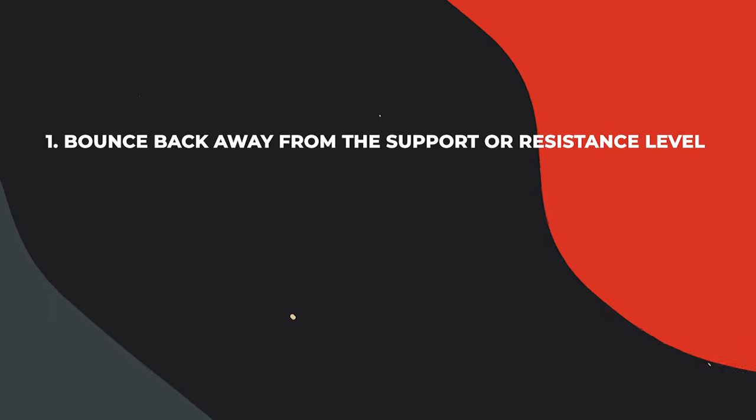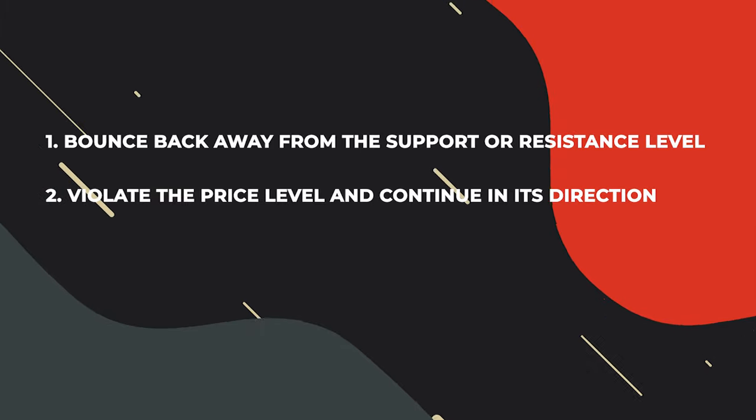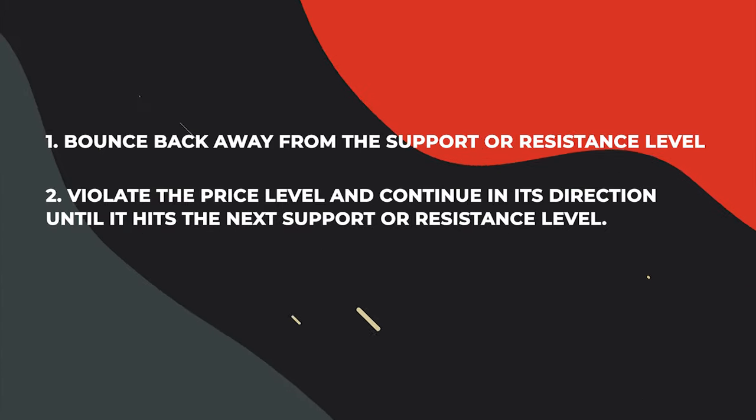As price reaches a point of support or resistance, it will do one of two things: bounce back away from the support or resistance, or violate the price level and continue in its direction until it hits the next support or resistance. Timing of some trades is based on the belief that support and resistance zones will not be broken. If the price moves in the wrong direction, the position can be closed at a small loss. If it moves in the right direction, however, the move may be substantial.